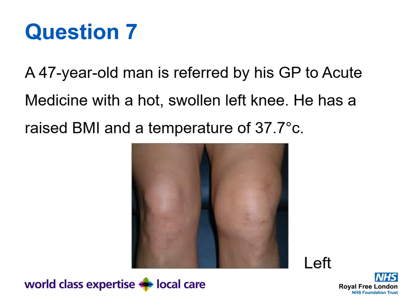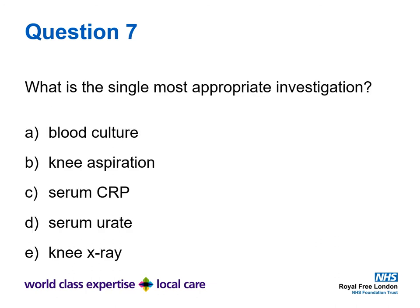Question seven. A 47-year-old man is referred by his GP to acute medicine with a hot swollen left knee as pictured. He has a raised BMI and a temperature of 37.7. What is the single most appropriate investigation? Is it A) blood culture, B) knee aspiration, C) serum CRP (C-reactive protein), D) serum urate, or E) knee x-ray?